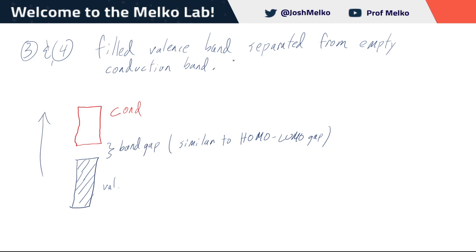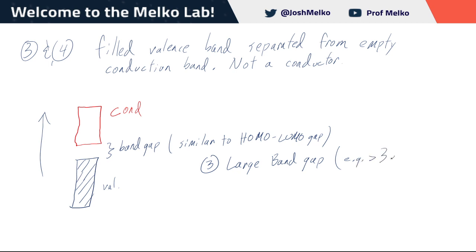These will not be conductors. If the band gap is very large — say greater than a few eV, maybe three electron volts — we call this an insulator. The reason is this is a lot of energy; it's not likely that thermal energy at 300 K or even 500 K is enough to cross this gap and make this thing conductive. Diamond is something that works out like this.